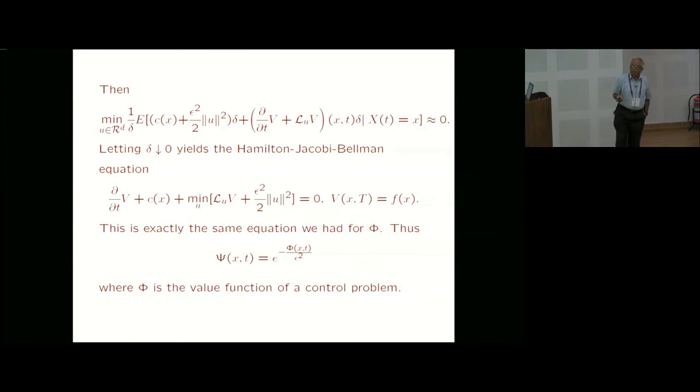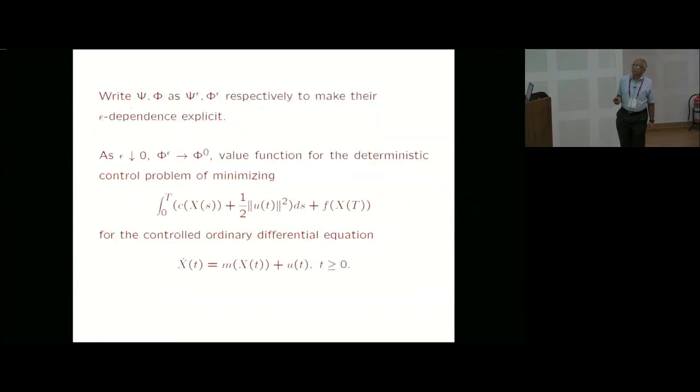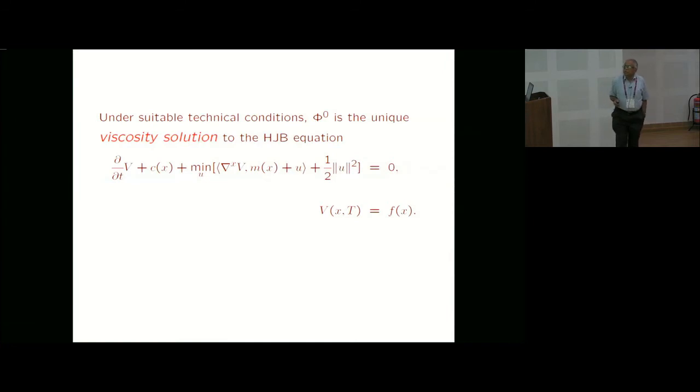I can apply ITO formula to this and get this term, where script L_u is the controlled generator of the controlled diffusion. This comes directly from ITO formula. I have v(x,t) on both sides, I can cancel v(x,t), and get zero on the left-hand side, then divide the right-hand side by delta, and letting delta go to zero, you get this equation. That's the Hamilton-Jacobi-Bellman equation. It generalizes actually the Hamilton-Jacobi equation of classical mechanics. If you think of the Lagrangian formulation as a control problem of minimizing the action, and apply dynamic programming, you will get back to the Hamilton-Jacobi equation of classical mechanics. Now, this equation is exactly what I had got earlier for phi.